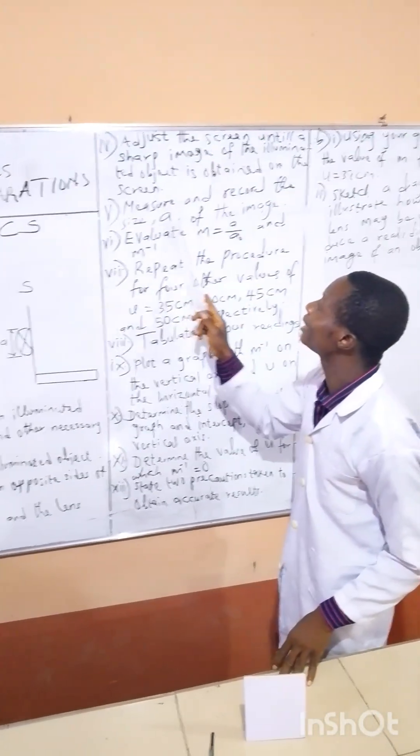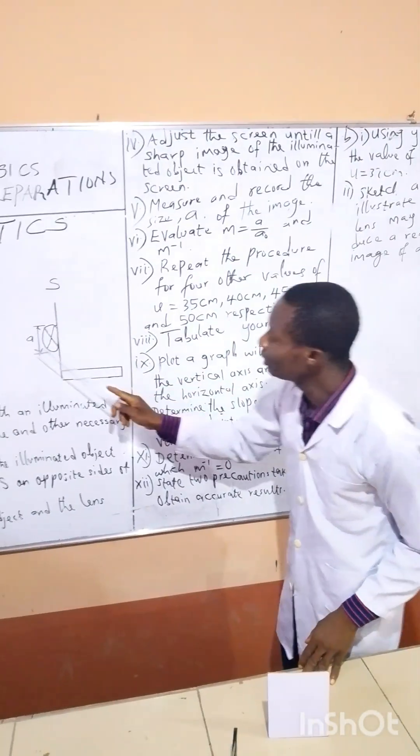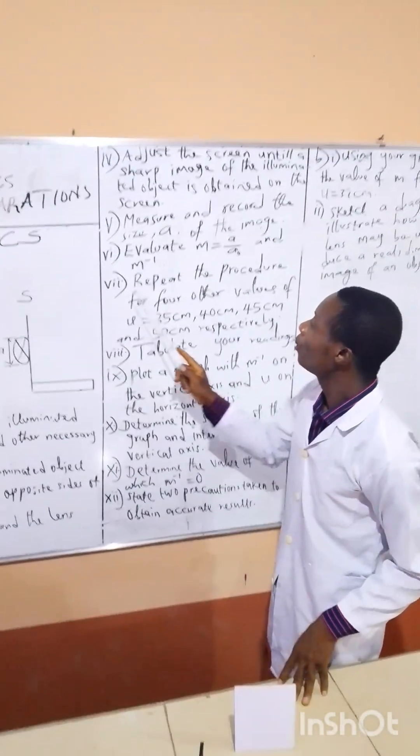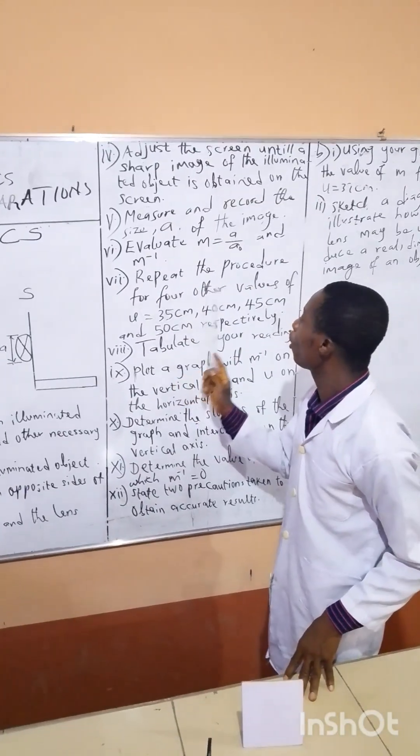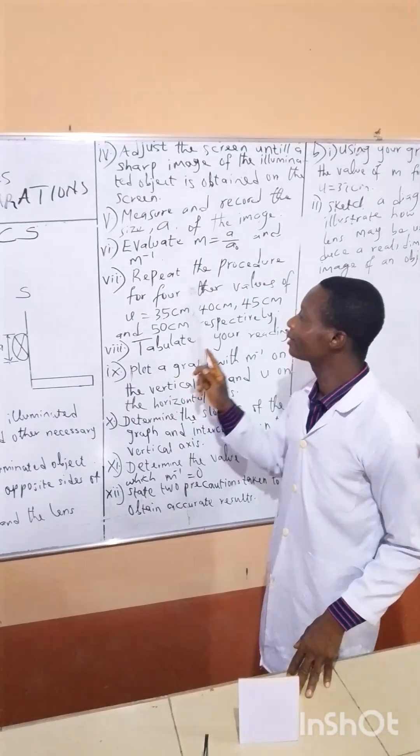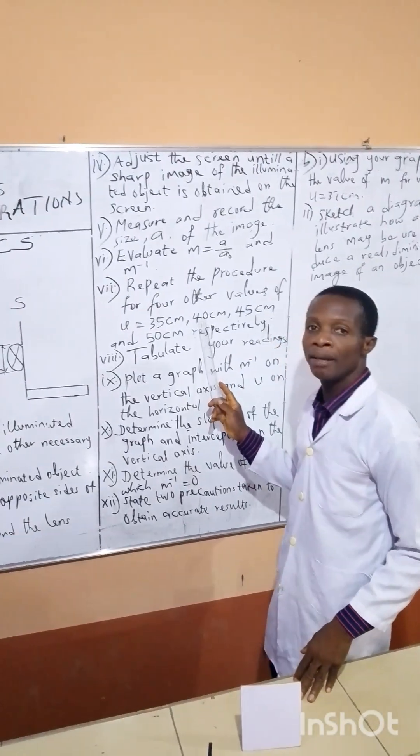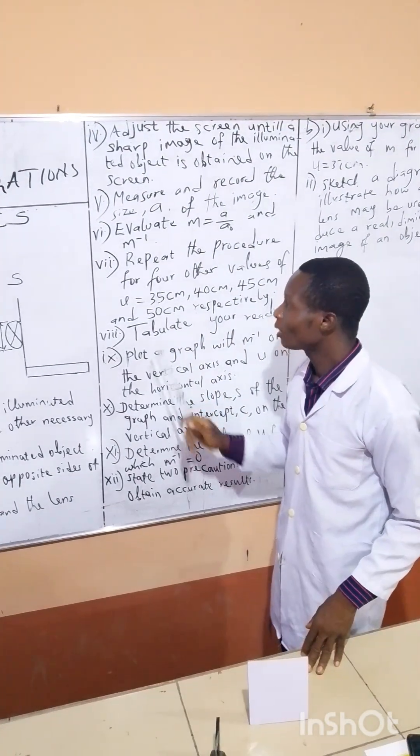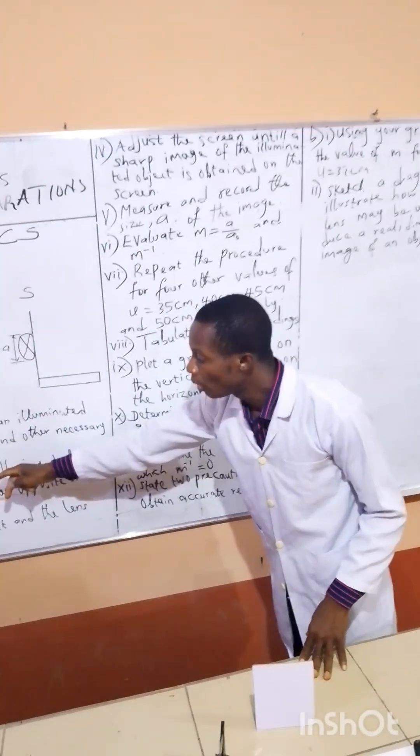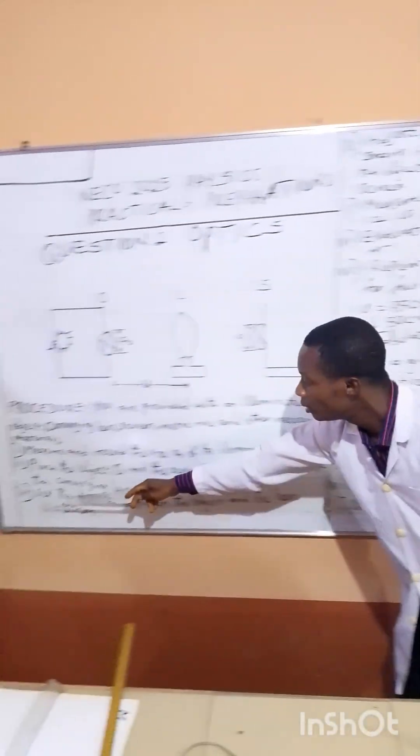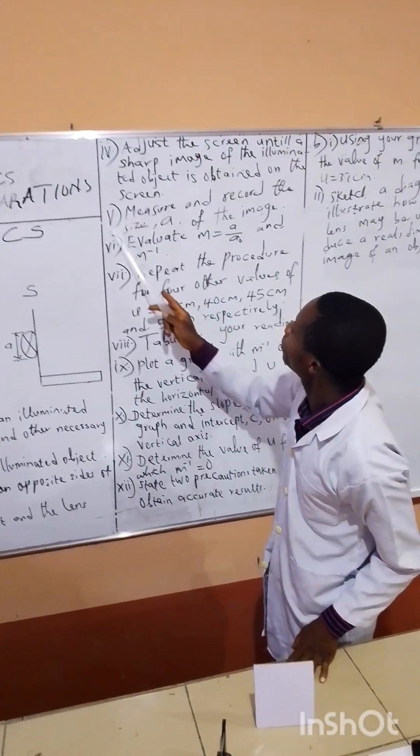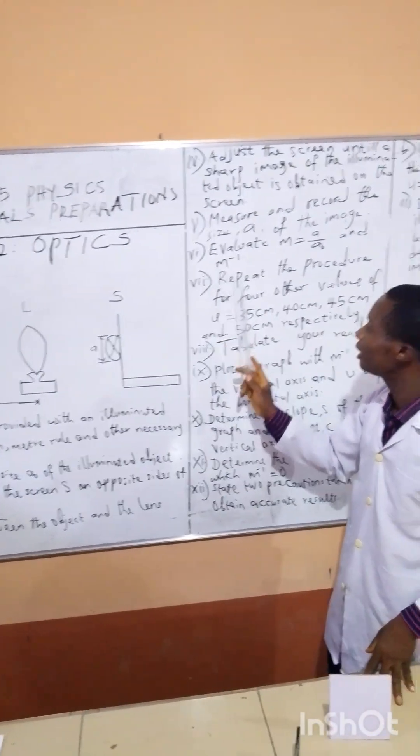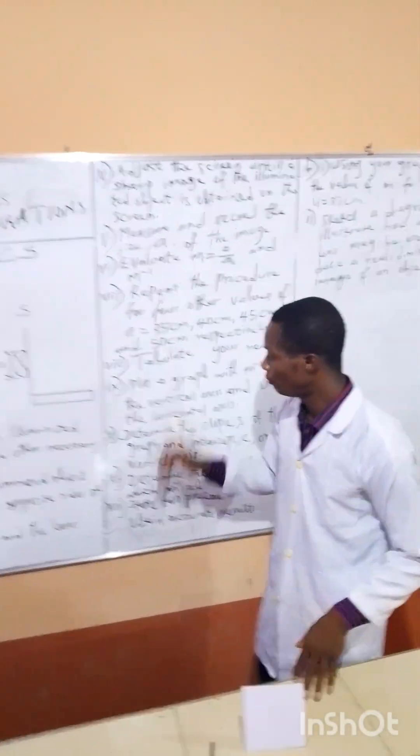Then measure and record the size A of the image. This is the image size A. You have to measure it with your ruler. Now, repeat the procedure for four other values of U equals 35 cm, 40 cm, 45 cm and 50 cm respectively. Then in each case, repeat what you did from steps 3 to 6. So that's how you get all your values.